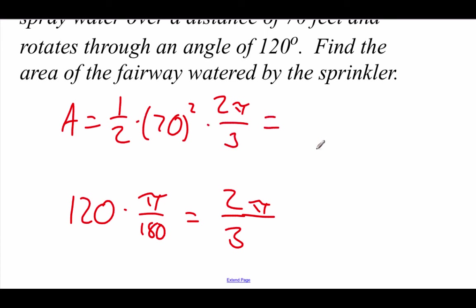And now we're just going to multiply all this together, punch it into our calculator, let the calculator do all the work for us. When we do that, we get 5,131.27 square feet.